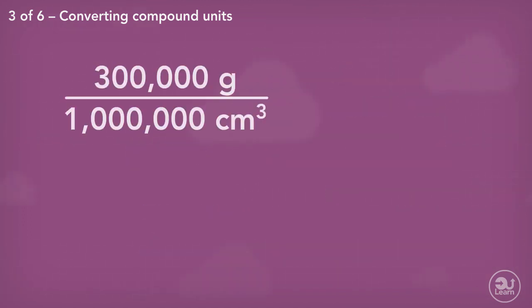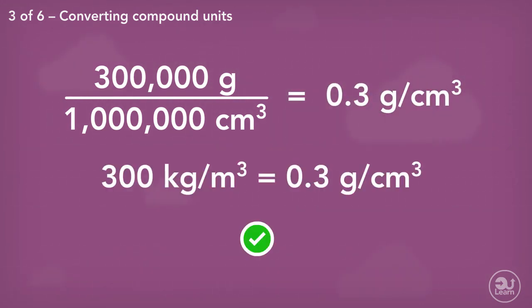The last step is to divide our new values, 300,000 divided by 1,000,000, which equals 0.3. Therefore, 300 kilograms per meter cubed is equivalent to 0.3 grams per centimeter cubed.